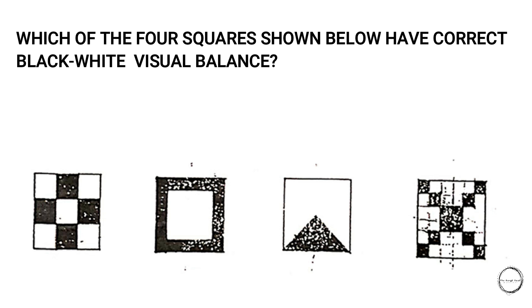The next phrase is 'concentric.' Here are the options and the right answer is option three. Moving on: which of the four squares shown below have correct black-white visual balance? Here are the options and the right answer is option four.